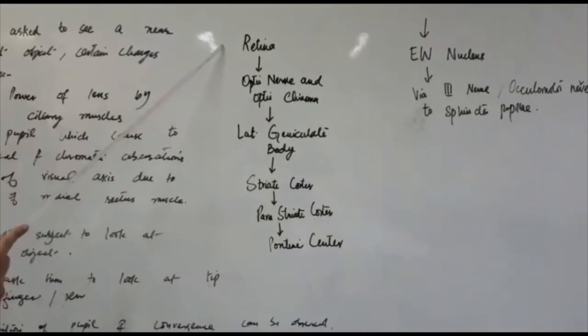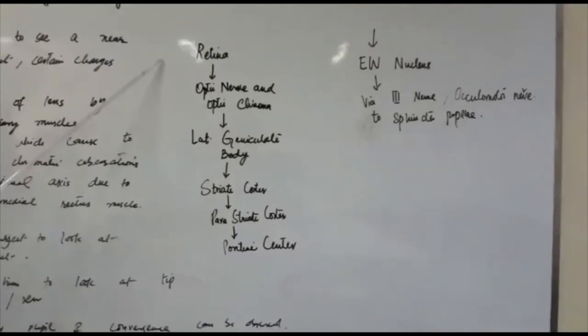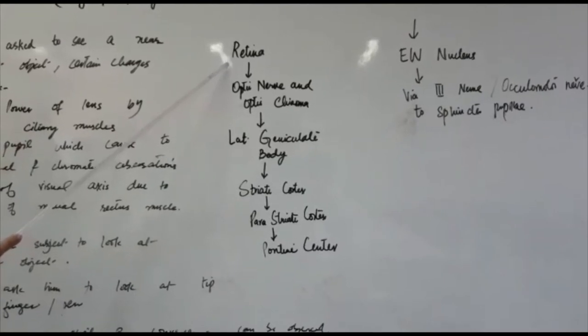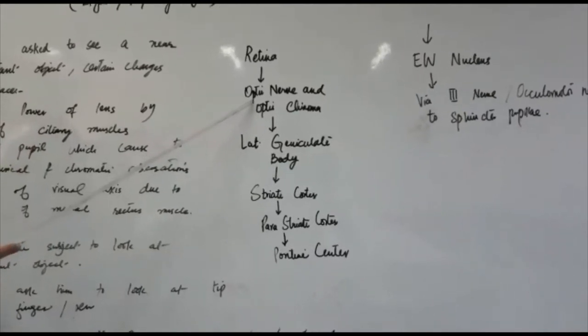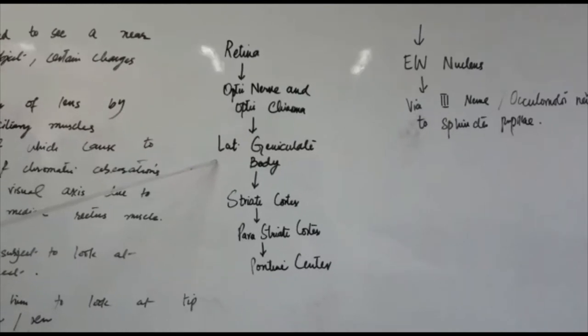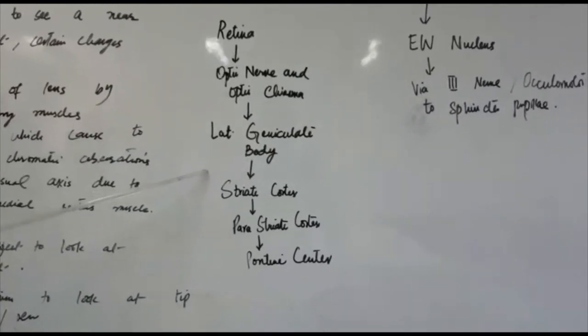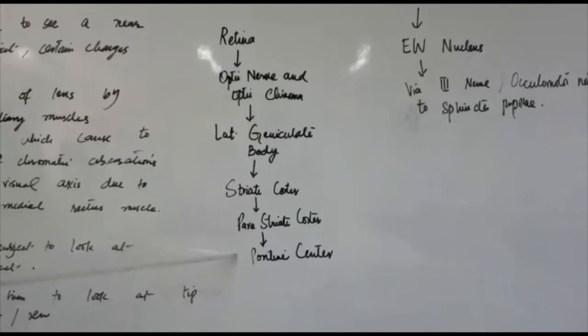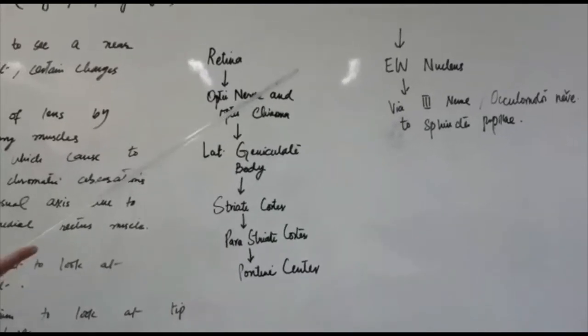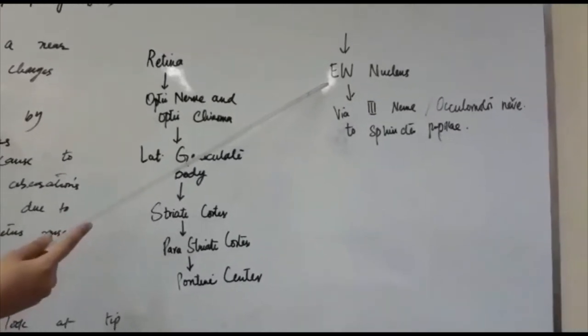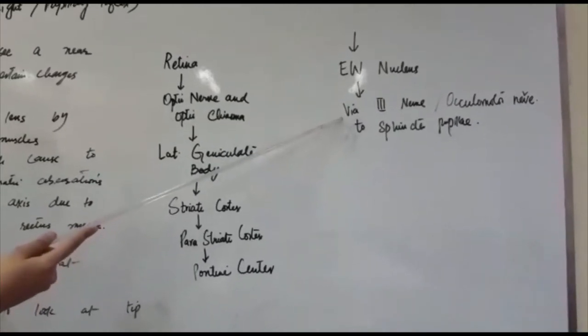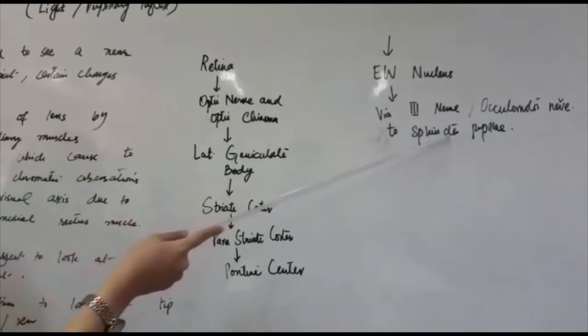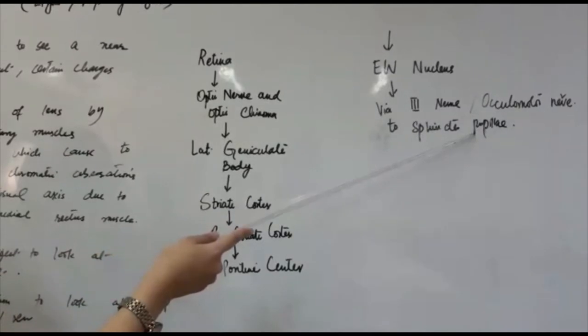The pathway which is followed during accommodation reflex is light on the retina which is transmitted via optic nerve and optic chiasma to the lateral geniculate body. Then it uses striate cortex, parastriate cortex, then pretectal center, Edinger-Westphal nucleus and then efferents via third nerve or the oculomotor nerve to the sphincter pupillae. This is the muscle which is important in accommodation reflex.